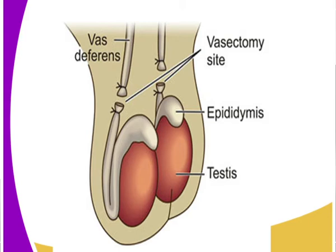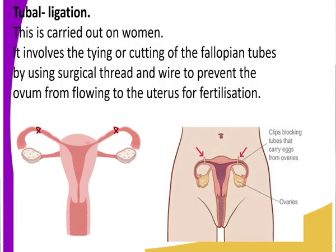Vasectomy was introduced to ensure that it is not only females who take part in family planning - men can participate too. We also have tubal ligation, which is carried out in women. It involves the tying or cutting of the fallopian tubes to prevent sperm from reaching the ovum.